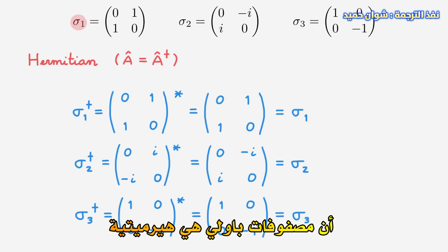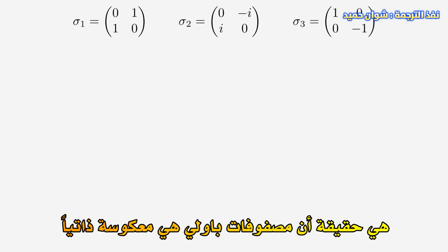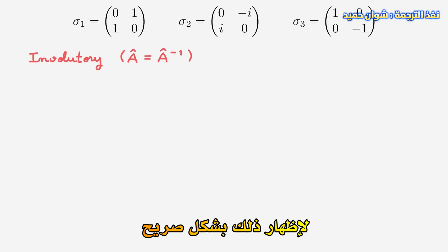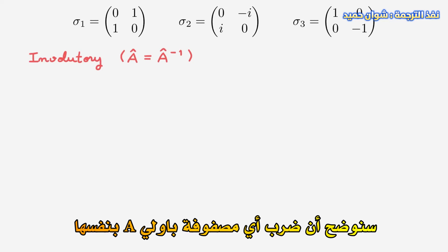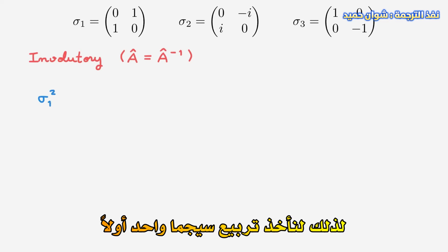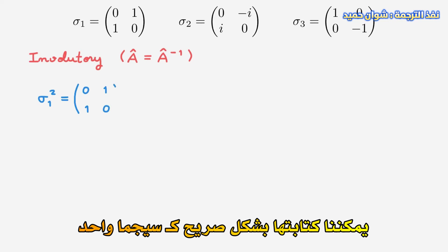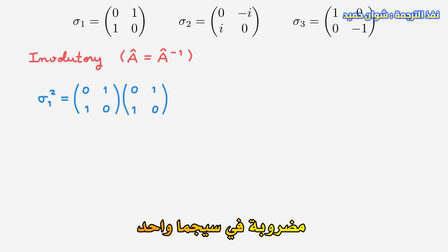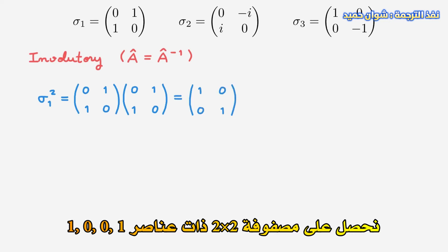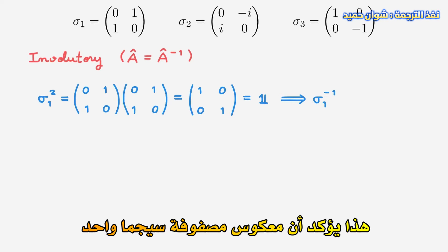These relations explicitly confirm that the Pauli matrices are Hermitian. The next property that we will investigate is the fact that the Pauli matrices are involutory, which means that an operator or matrix A is equal to its own inverse. To show this explicitly, we will demonstrate that multiplying a Pauli matrix by itself yields the identity. So let's take sigma-1 squared first. Applying the usual rules of matrix multiplication, we get the 2x2 identity matrix, which confirms that the inverse of the sigma-1 matrix is itself.